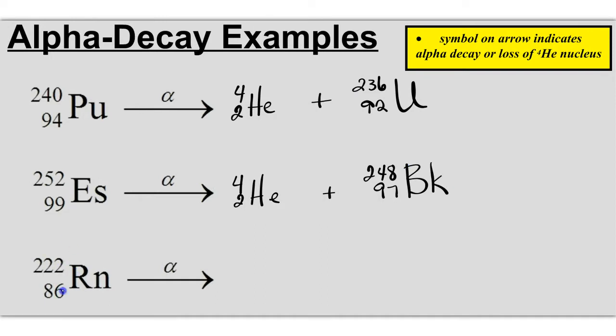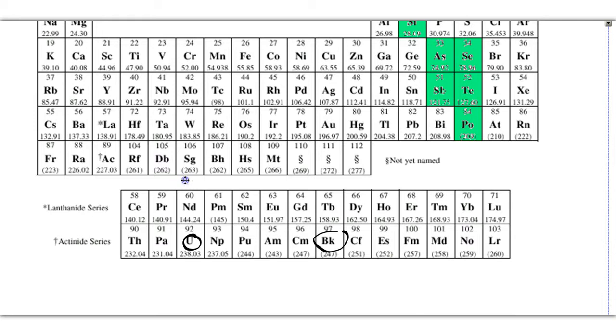Lastly, 222 over 86 radon undergoes alpha decay, so it emits an alpha particle. 222 minus 4 equals 218. 86 minus 2 equals 84. We look on the periodic table for element number 84, and we find it to be polonium.